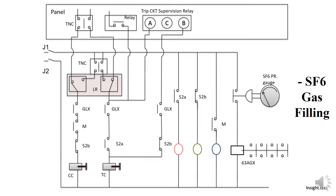As we see here, the main J1 and J2, which is DC supply, is shown here. Here is the MCB, TNC switch, trip and close switch, LR local remote switch, and here is the SF6 gauge.